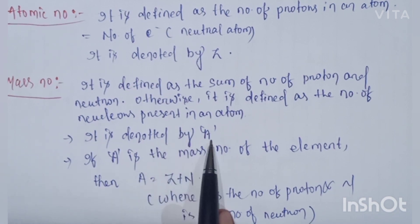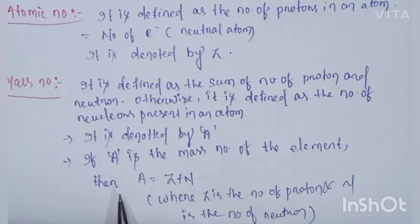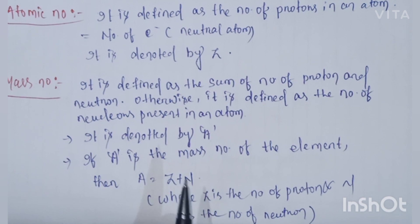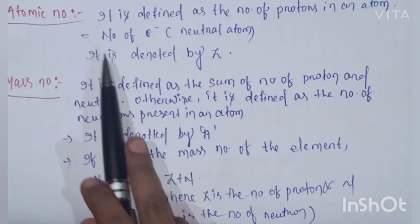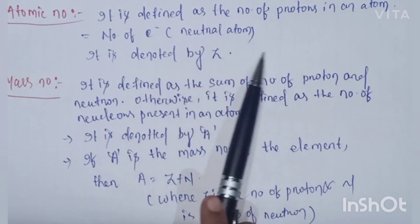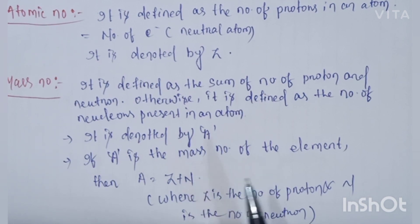If A is the mass number of an element, then A is equal to Z plus N, where Z is the number of protons and N is the number of neutrons.